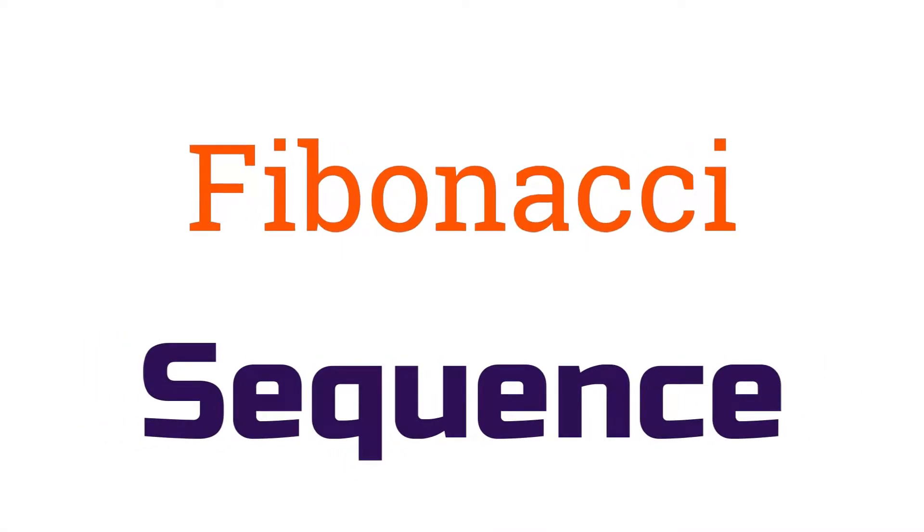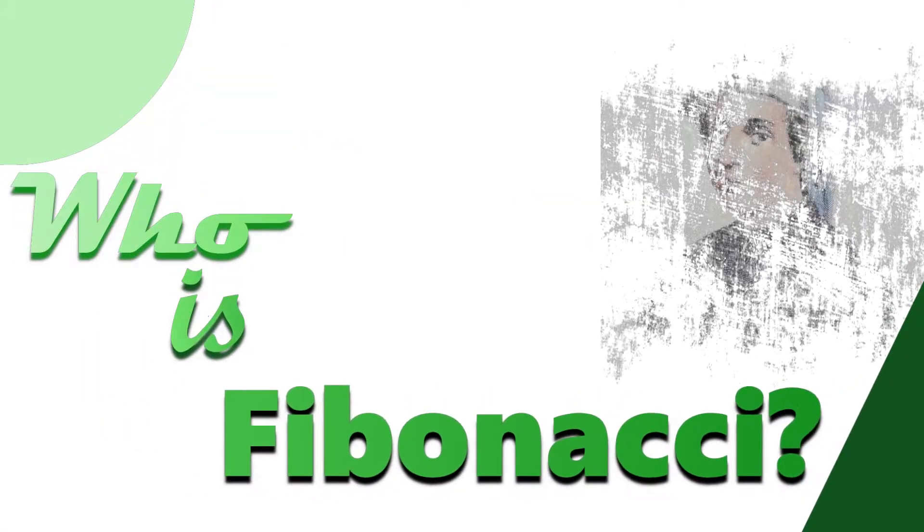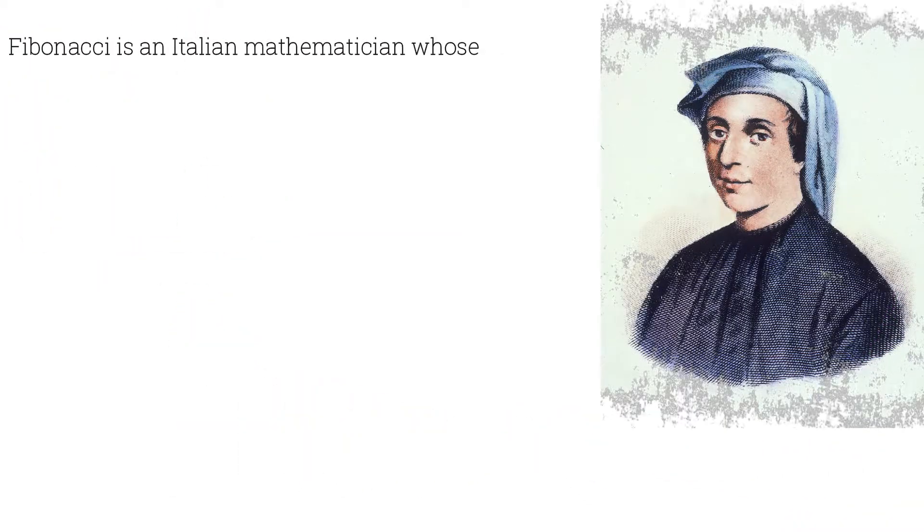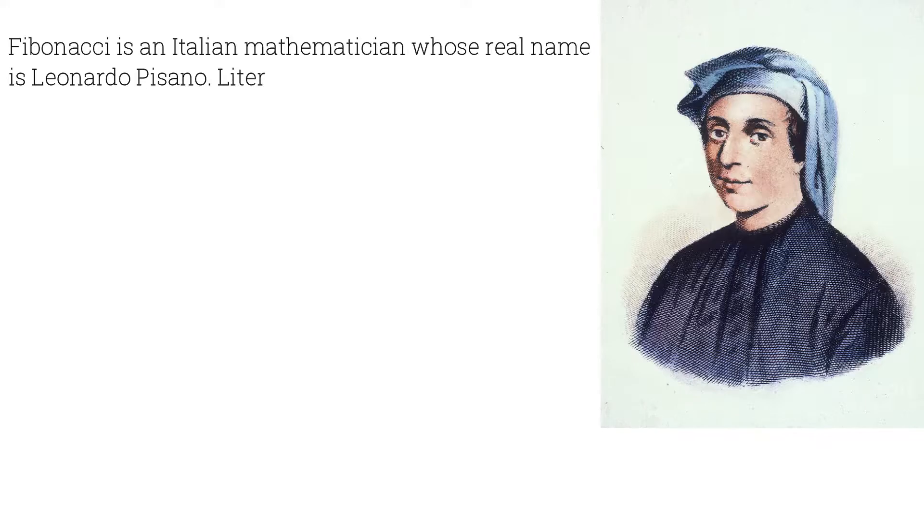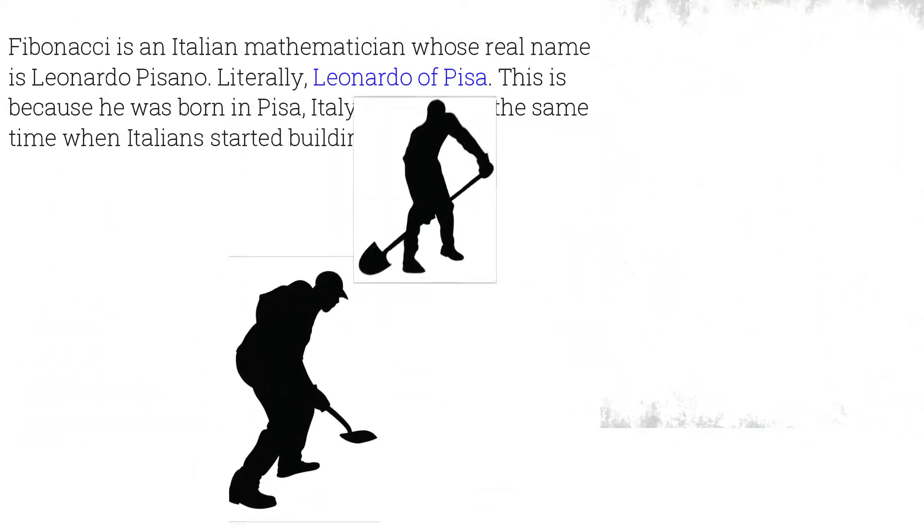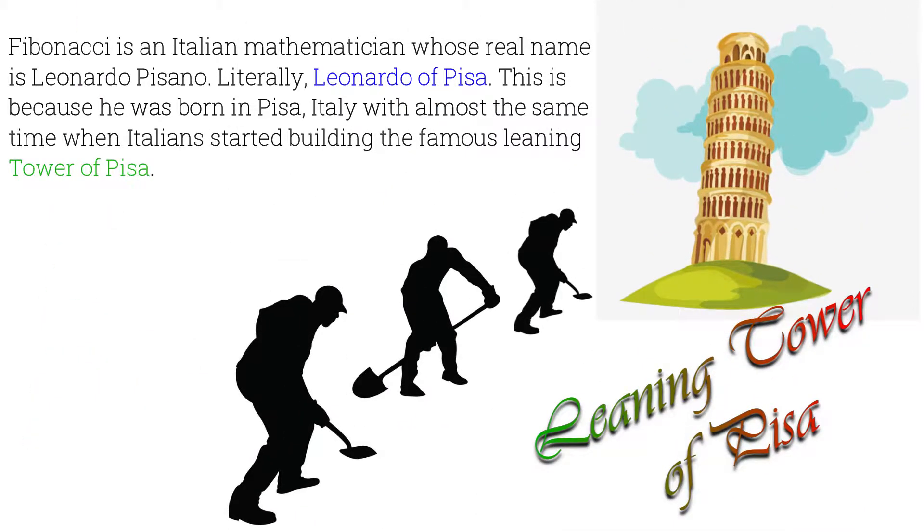Speaking of number patterns, let's talk about the Fibonacci sequence. To start, who is Fibonacci? Fibonacci is an Italian mathematician whose real name is Leonardo Pisano, literally Leonardo of Pisa. This is because he was born in Pisa, Italy, with almost the same time when Italians started building the famous Leaning Tower of Pisa.